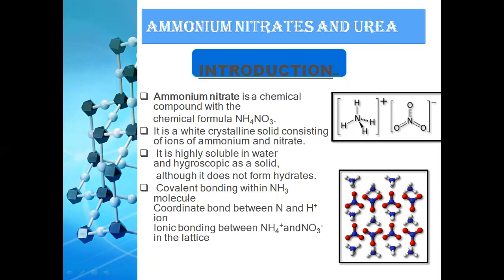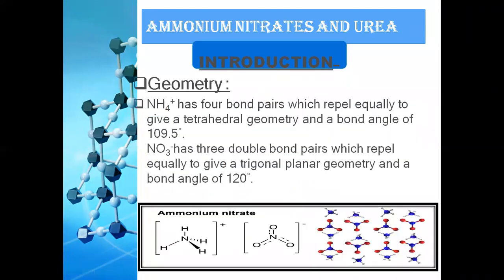Regarding the bonding in ammonium nitrate: nitrogen makes three covalent bonds with three hydrogen atoms, and one coordinate covalent bond with one hydrogen atom. The bond between the ammonium and the nitrate ion is ionic. The ammonium ion has four bond pairs which repel equally to give a tetrahedral geometry with a bond angle of 109.5 degrees.